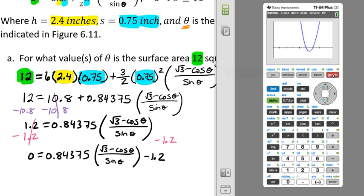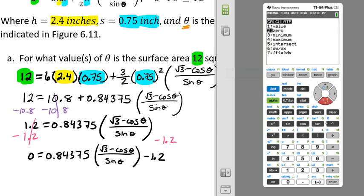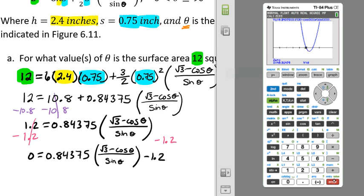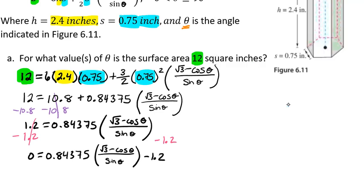Now we're going to use our calculate feature. We go to 2nd, Calculate, and use option number two to find our zero values. We confirm we're on the left-hand side of the first intersection point, then move to the right-hand side, making sure the intersection point is between our two cursor positions. We hit enter, and that gives us a value of 49.91, so our first estimate is that theta is approximately 49.9 degrees.